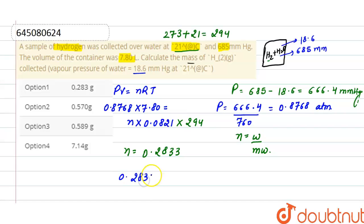The number of moles is 0.2833, and if we multiply by the molecular mass of hydrogen, which is 2, we get the mass of hydrogen that is collected, and it will be 0.566 grams. Here the correct option is option 2, that is 0.570. By rounding off, we can write 0.566 as 0.570.